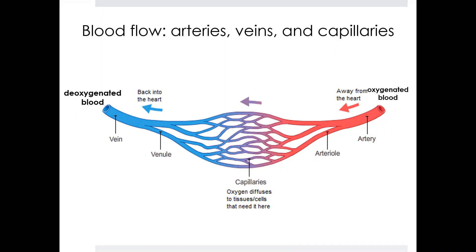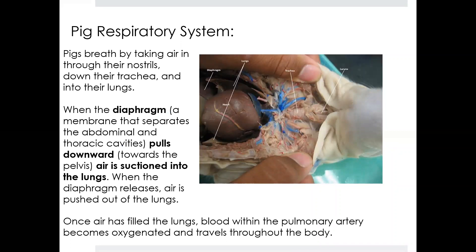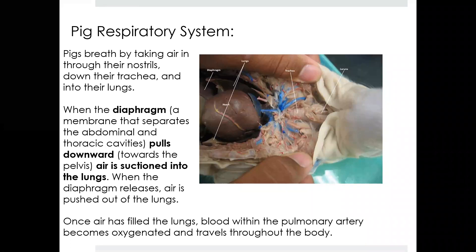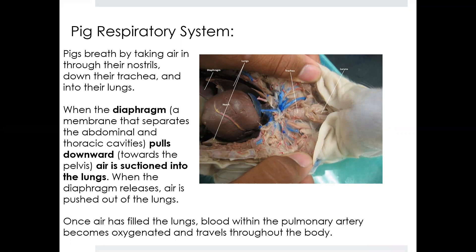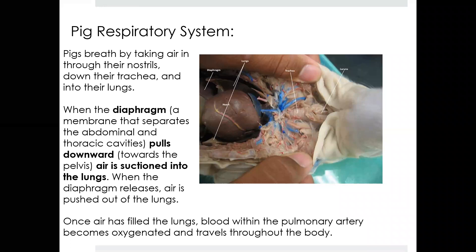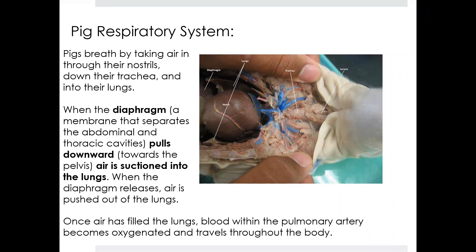Now let's talk about the respiratory system. Pigs breathe by taking in air through their nostrils; the air travels down through their trachea and enters their lungs. An important innovation that mammals have is the presence of the diaphragm — a membrane that separates the abdominal and thoracic cavities. During breathing, the diaphragm pulls downward towards the pelvis, which causes air to be suctioned into the lungs. When the diaphragm releases or contracts, air is pushed out of the lungs, allowing air to go in and out.